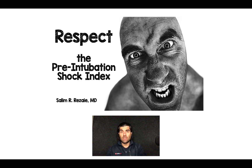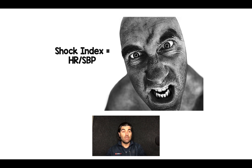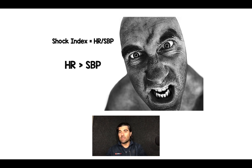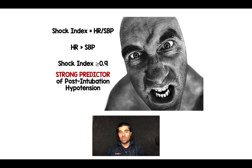So first of all, what is the shock index? It's basically heart rate divided by systolic blood pressure. An easier way to remember this is that if your heart rate is greater than your systolic blood pressure, that's bad, and your patient is probably in a shock state. If you wanted to be more specific, a shock index of greater than or equal to 0.9 is a strong predictor of post-intubation hypotension.